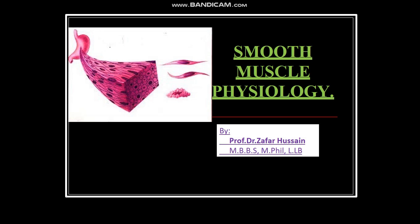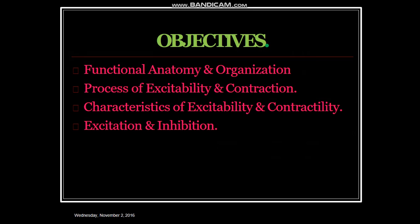As-salamu alaykum, dear friends. Today's topic is smooth muscle physiology, and I hope after the end of this lecture students will be able to understand and describe: the microanatomy of the smooth muscle, histologic features, contents of this muscle, and how it differs from cardiac muscle and skeletal muscle. The functional anatomy and organization, process of excitability and contraction, characteristics of excitability and contractility, and excitation and inhibition — these are the major objectives of this lecture.